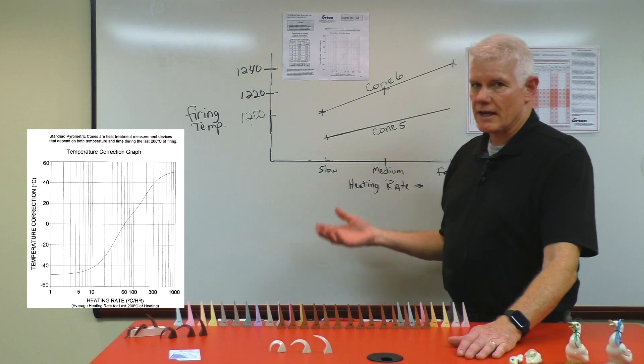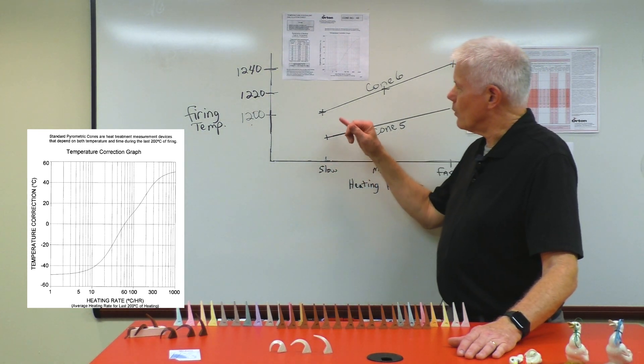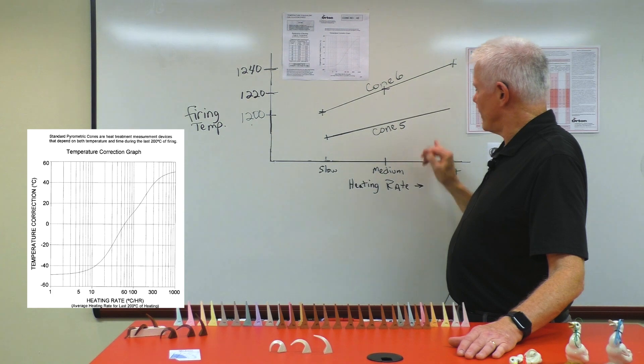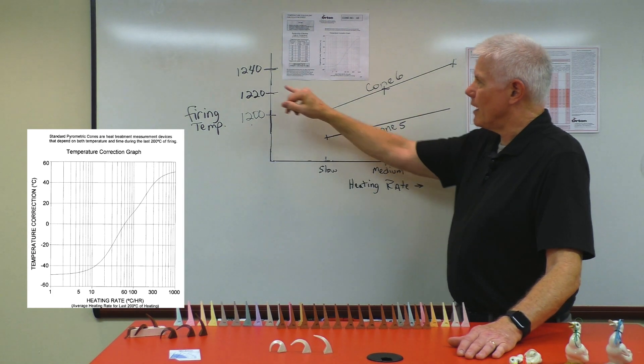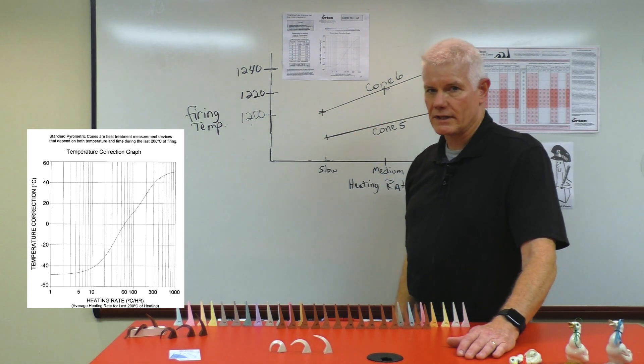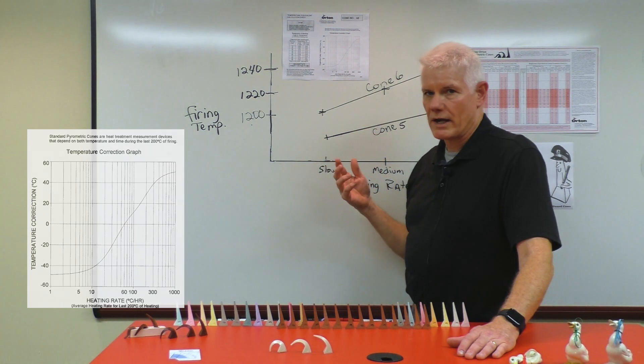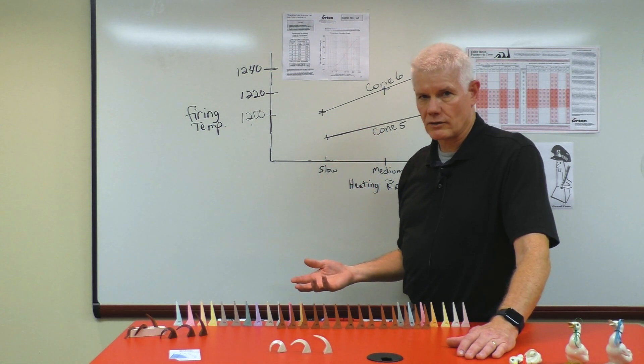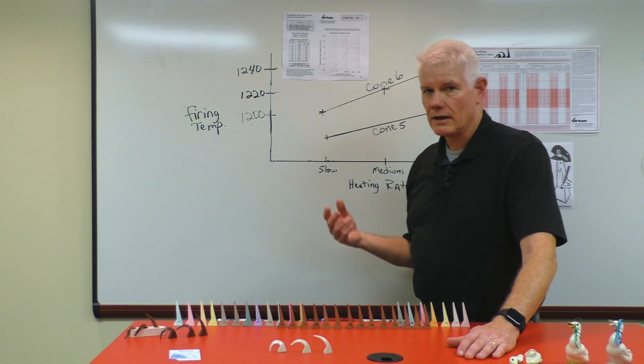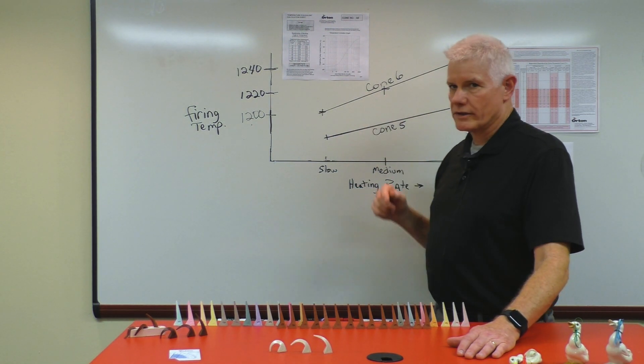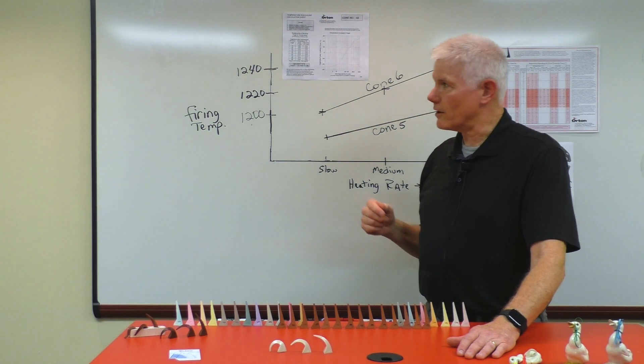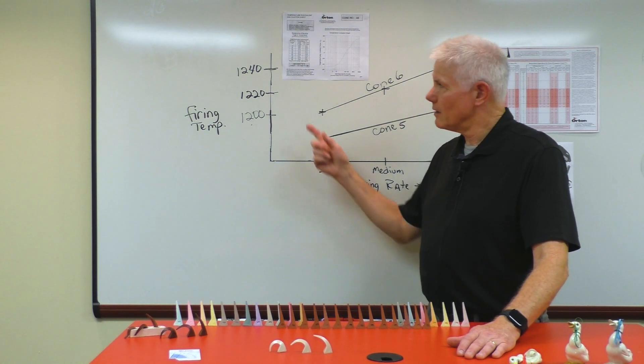If you were to increase the heating rate, we know that you can fire at a fast rate and it will deform at 40 degrees higher at 1240. Most of the medium rates that we program electronic kilns to fire on cone 6 at a temperature of 1222 degrees, which is in the middle.